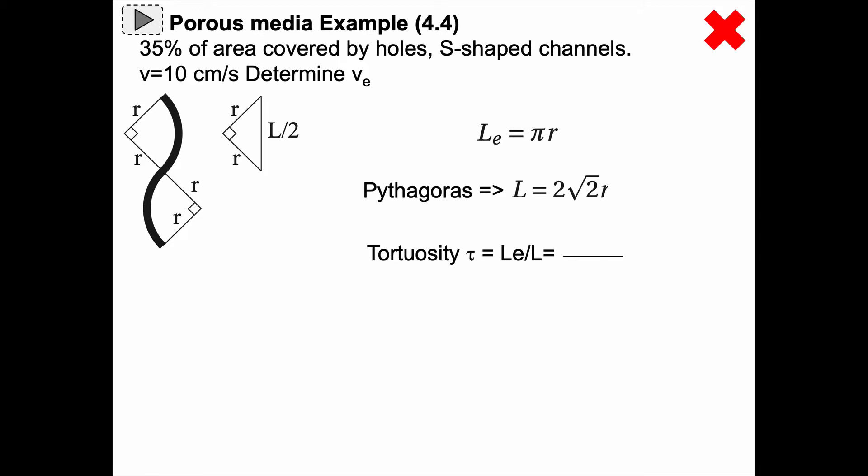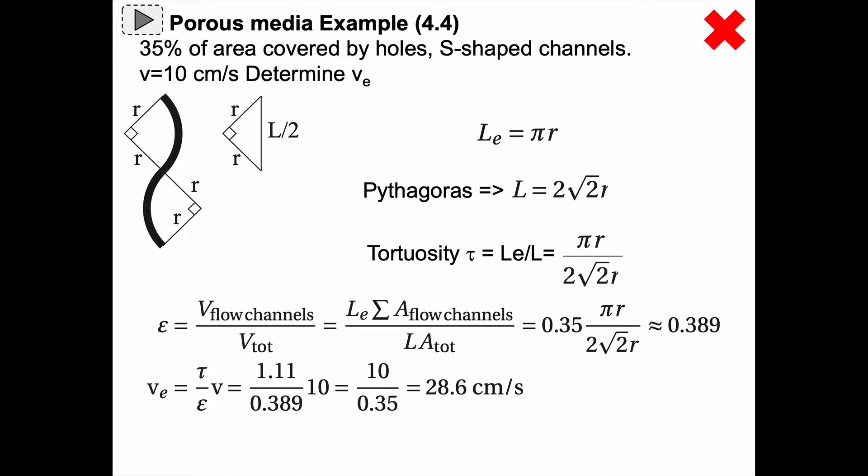So we can calculate the tortuosity which is the effective length divided by the thickness of the material. So that is pi r divided by 2 square root of 2r and that gives us 1.11.